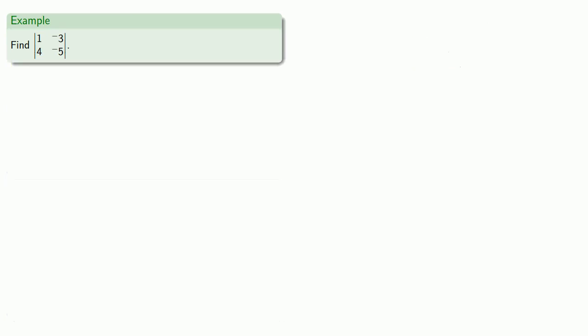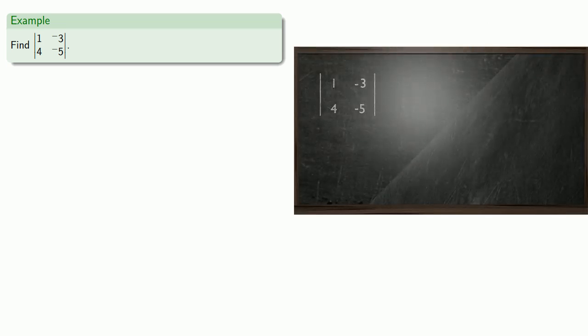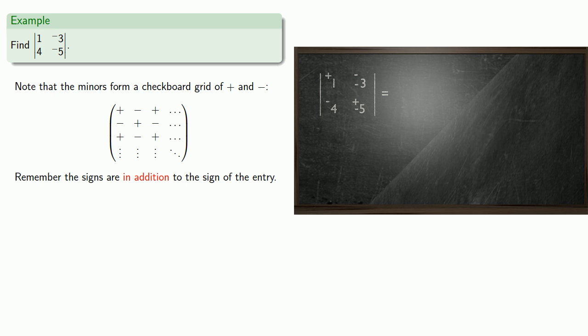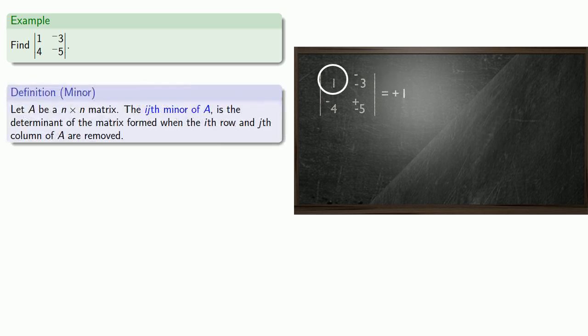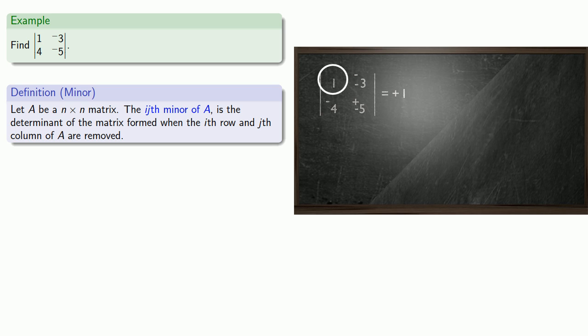Let's find the determinant of a 2 by 2 matrix. The first useful thing to do is set down the checkerboard grid of plus and minus. We can expand along any row or column, so let's choose the first row. We'll take the first row, first column entry along with its sign, and the minor is formed by crossing out the row and column that it was in.